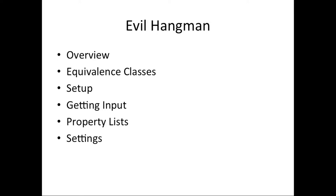We'll start out with an overview of the project. We're going to talk about equivalence classes, which are sort of key to how Evil Hangman is going to work. We'll talk about setting up the project, how we're going to get input in the application, how we can use property lists within the project, and finish up with a little bit about how you can store settings in your application.